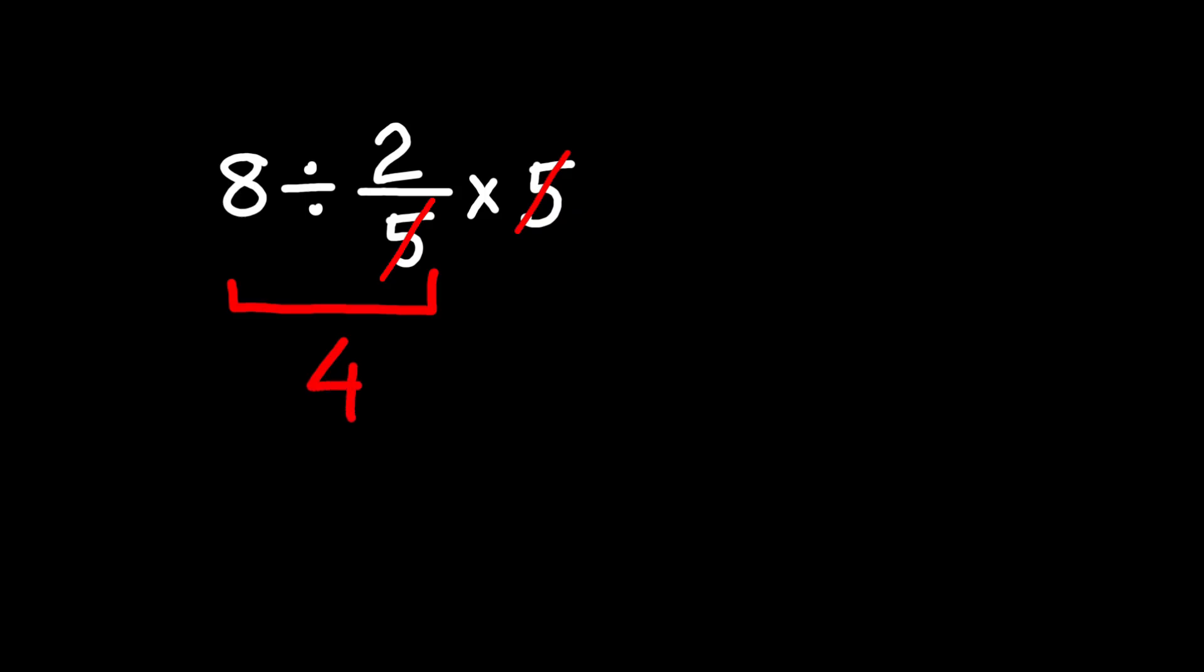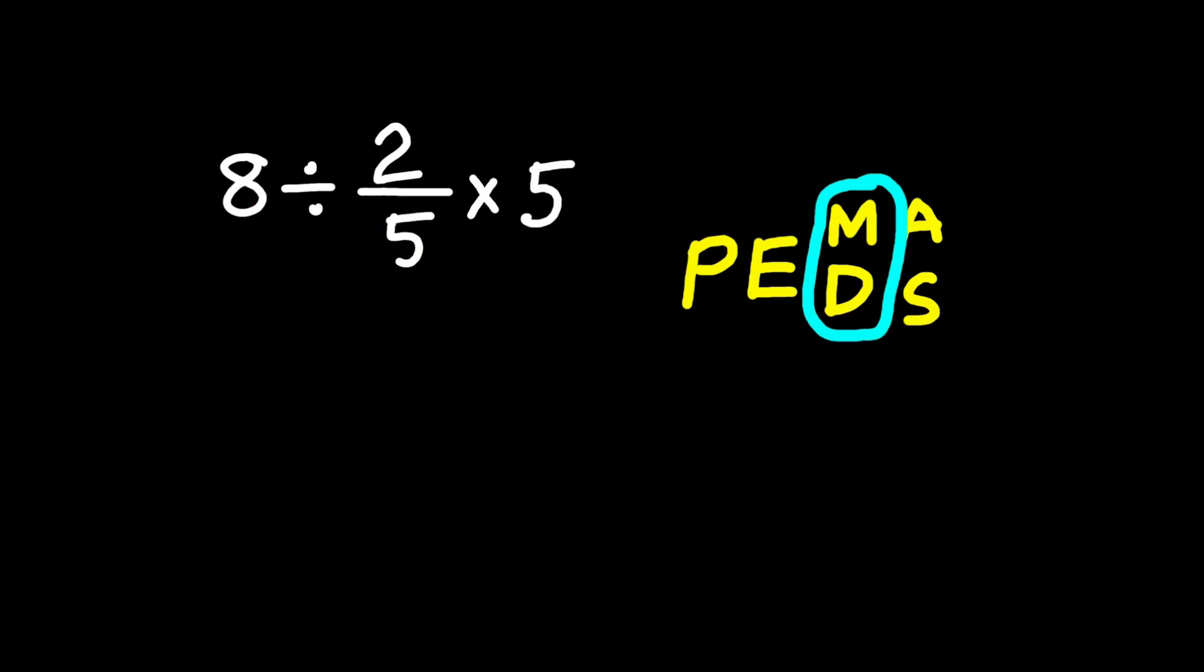Well, sorry to break it to you, that answer is not correct. Here's why. In the order of operations, multiplication and division have equal priority, which means we don't just cancel things wherever we want, we go left to right.